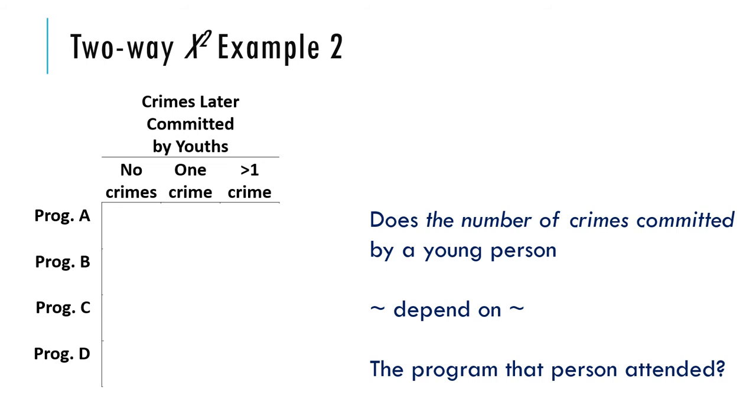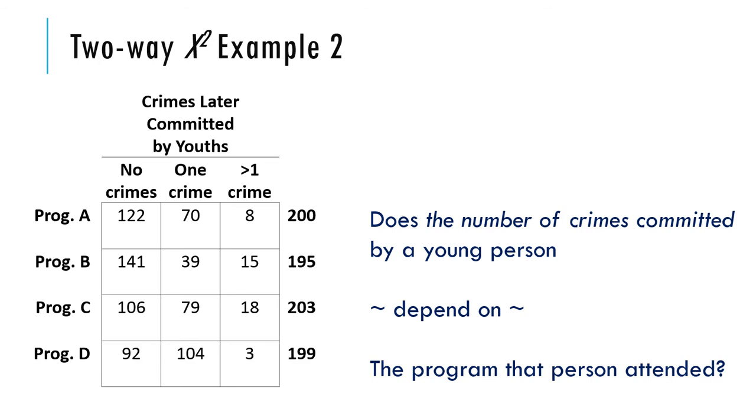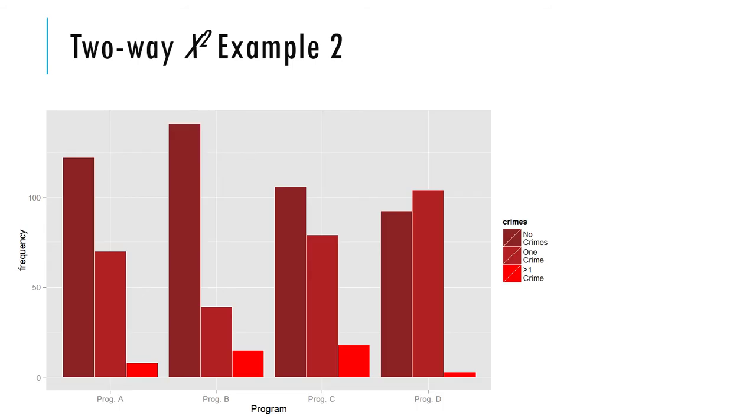Putting up our research question again, let's look at the data. Program A, we have 122, 70, and 8. Program B, we have a different distribution. You can see the distributions are a little bit different, not radically different perhaps. It might be hard to tell which programs will be significantly different from the others. That's why we have to do the chi-square. You'll notice we have the column totals and row totals. That's one reason we talked about that back when we did that portion of our class.